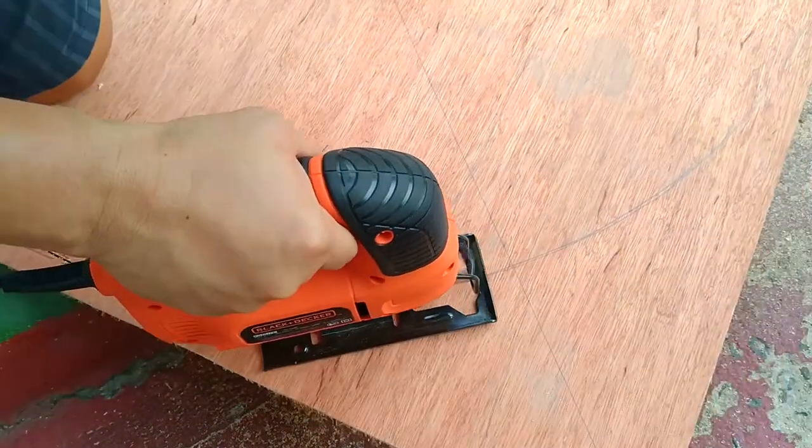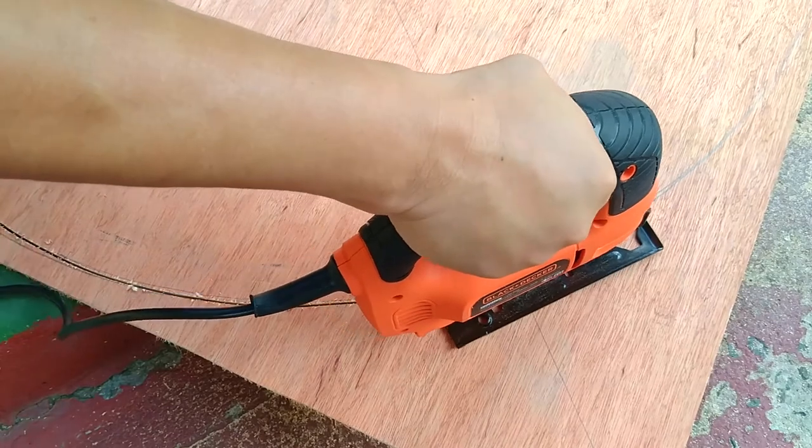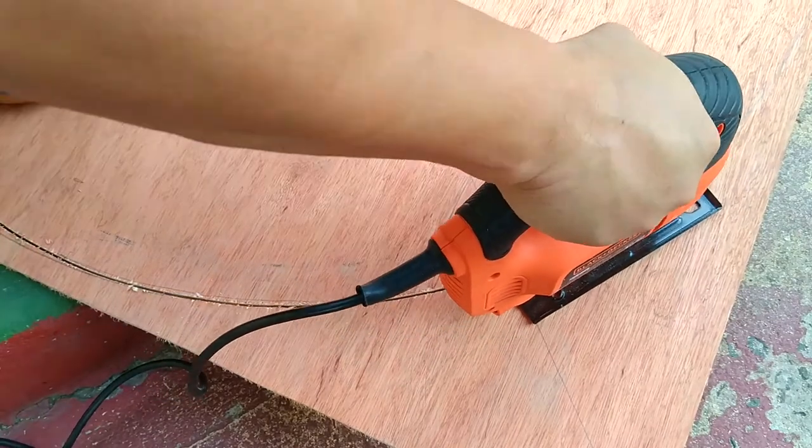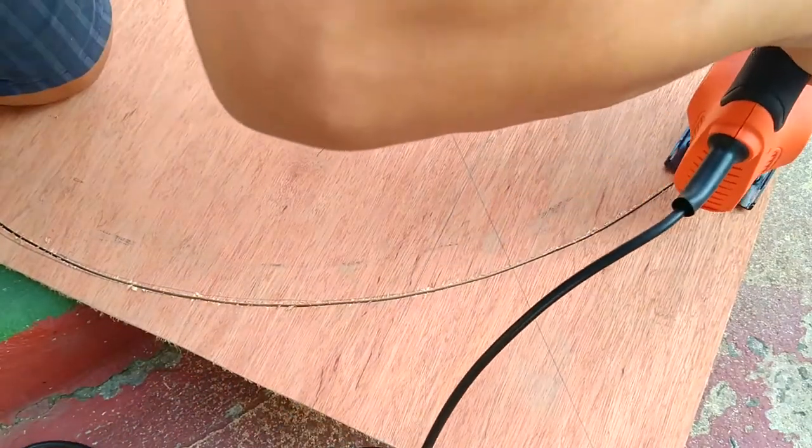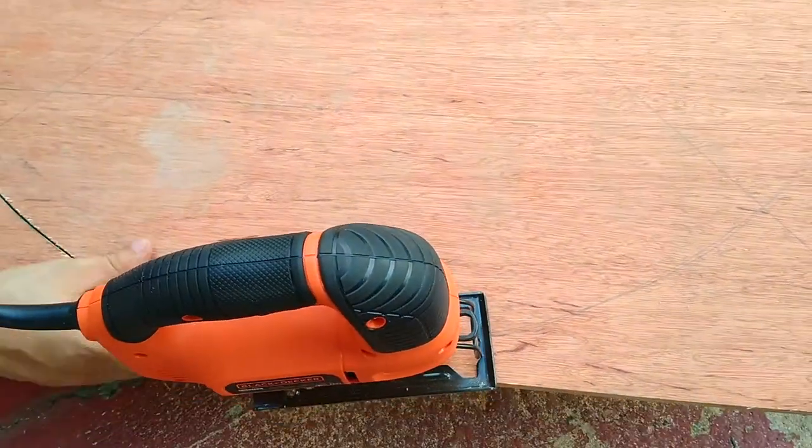So here we go. Does it now become obvious why I cut a square first? It's so much easier to maneuver and adjust our square template on this overhang. Just imagine how cumbersome it would be if I was cutting this circle directly from a humongous 8 by 4 feet plywood.